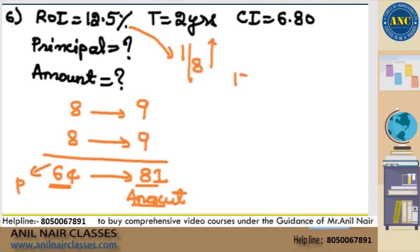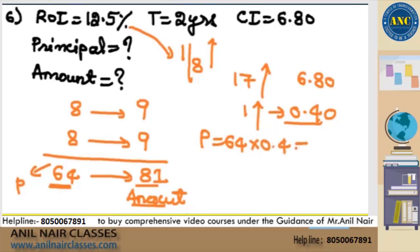64 to 81, 17 increase. But according to the question it is 6.8. So 1 increase is nothing but 0.4. Principal is 64 into 0.4, and amount is 81 into 0.4. I hope it is clear. Introductory question. Any student who got the answer right?